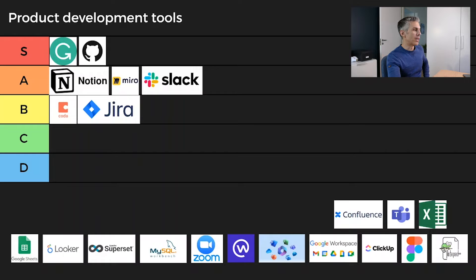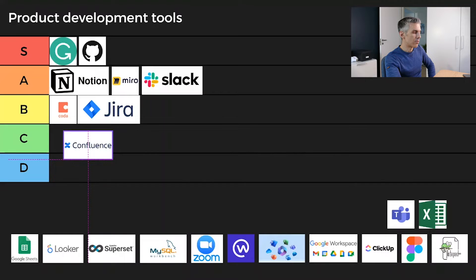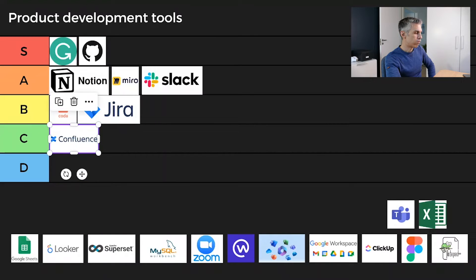Next is Confluence — now we're getting into the ones I don't like quite so much. I'm going to have to give this one a Z. If you're working with Jira and Atlassian tools, it probably makes sense. But having used Notion, I'd say go give Notion a try and then tell me what you think about Confluence. If you're using Confluence and think it's amazing, let me know in the comments.